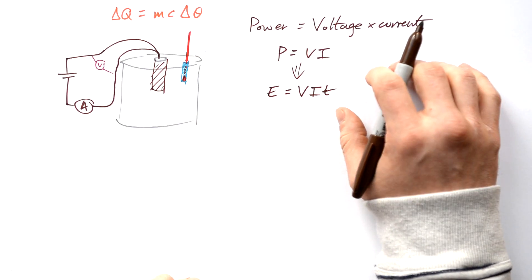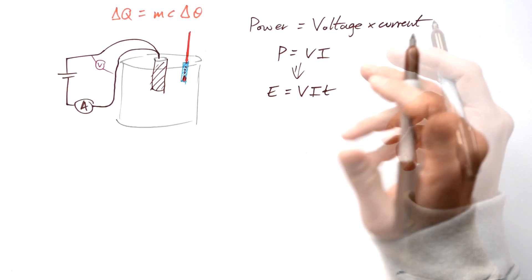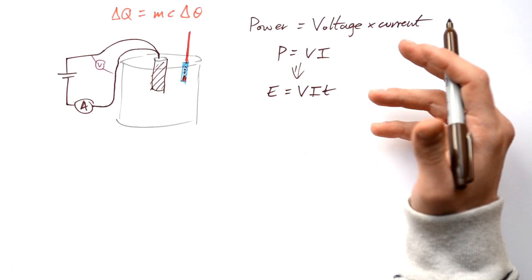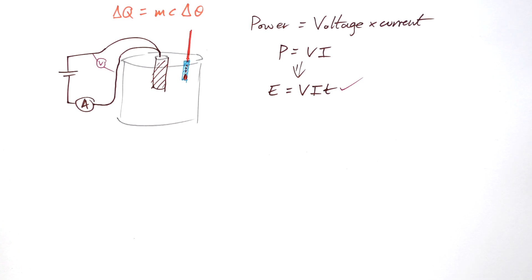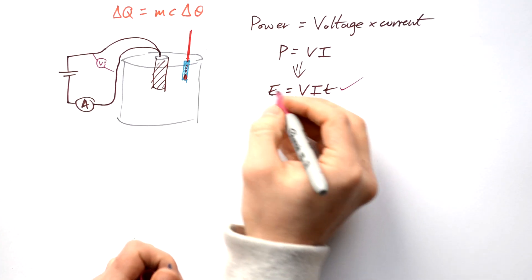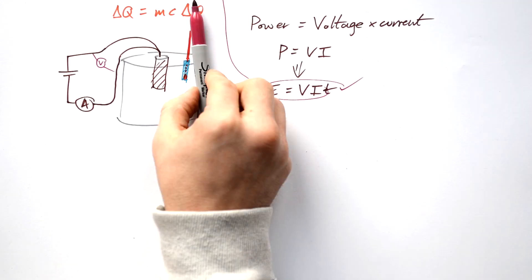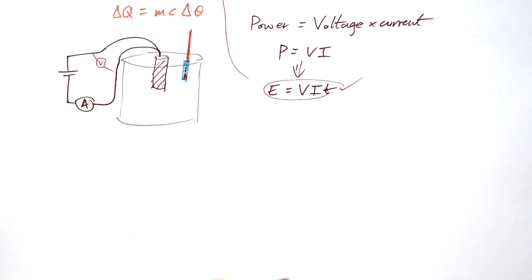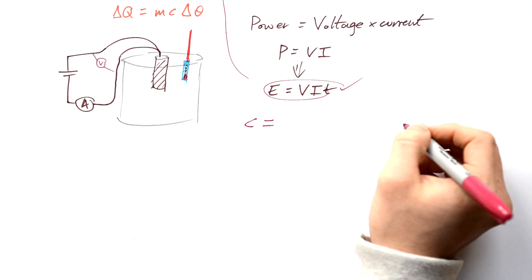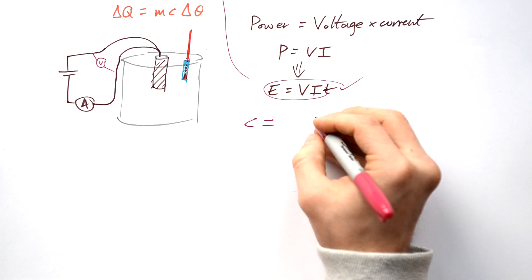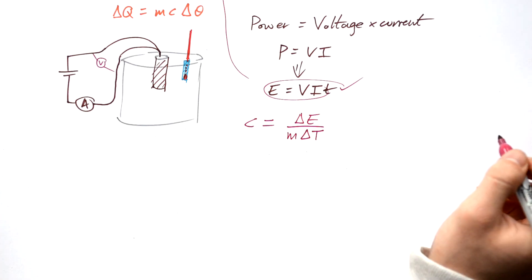We have to be careful because some energy is lost to the surroundings, so you take this value with a pinch of salt — but it's a good opportunity to discuss sources of uncertainty and improvements like insulation. Once we have the energy supplied to the block, we know it equals the energy needed to raise the block's temperature. Knowing the mass and the change in temperature, we rearrange for specific heat capacity: SHC = ΔE / (m × ΔT).